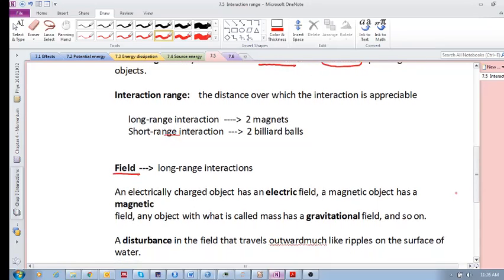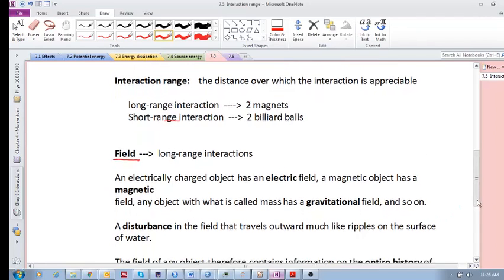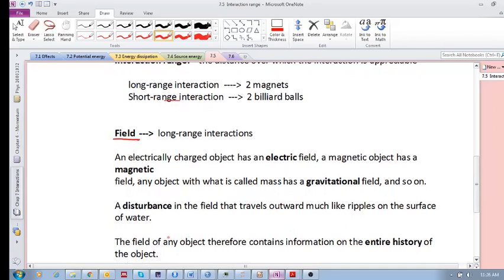What is interesting is that a field of an object contains information on the entire history of the object. If there's a disturbance in the field, this disturbance travels outward like ripples on the surface of water.